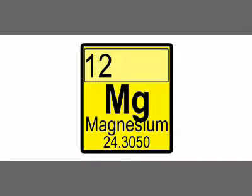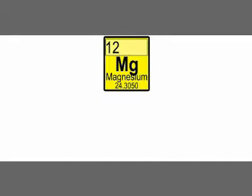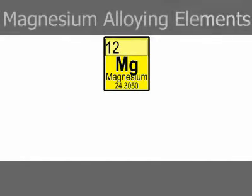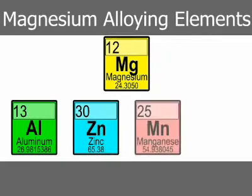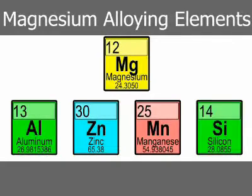The element magnesium has a specific gravity of 1.74, making it the lightest commonly used structural metal. When used as a base for die-casting alloys, magnesium is alloyed with various combinations of elements from a group including aluminum, zinc, manganese, silicon, and rare earths. Other elements present in the alloys are generally regarded as impurities, and maximum limits expressed as single numbers are specified.